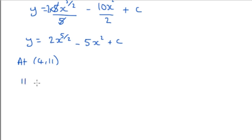So we've got 11 = 2 × 4^(5/2) - 5 × 4² + c.